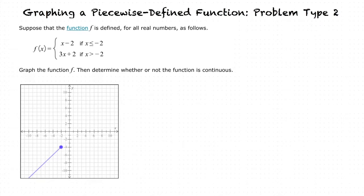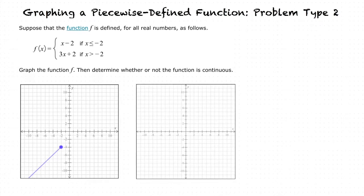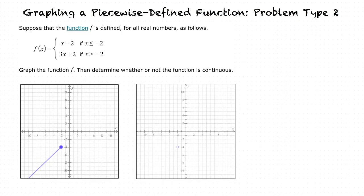Now that we have our first piece graphed, we can begin graphing the second part. Our second graph is 3x plus 2, and we are given the domain greater than negative 2. Right away, we know that this graph will have an open circle at the point with the x coordinate negative 2, and the line graph to the right of that point.